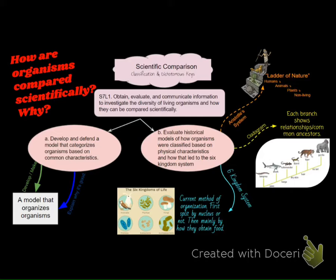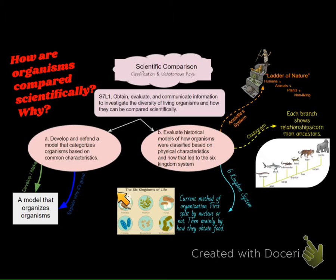Here's the standard. You can pause and look at this. We're going to start up at the top right, talk about the Ladder of Nature, and then move down around this way. We're going to look at historical models of how classification was done, and then more recently, the six kingdoms of life. There's actually seven now, but we still teach it as six — they split protists into two, but we'll go with six as it's in the standards. Then we're going to develop and defend a model.